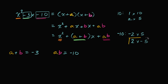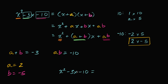We've figured out our two numbers: a equals two and b equals negative five. So our original expression, x squared minus three x minus 10, can be rewritten as (x plus 2) times (x minus 5). We're done — we've factored it as the product of two binomials.